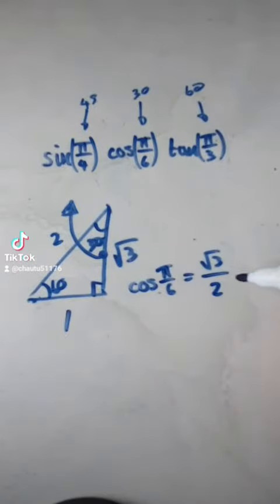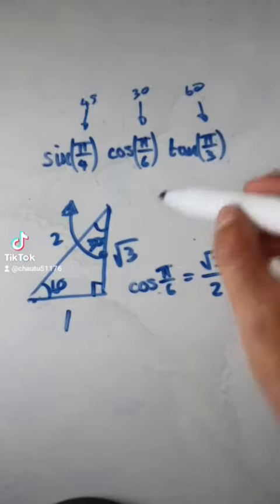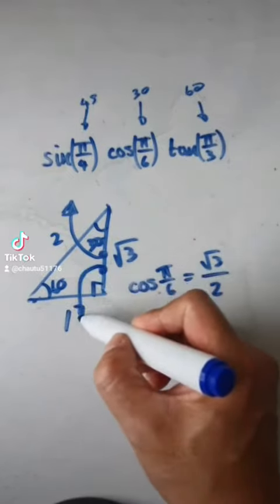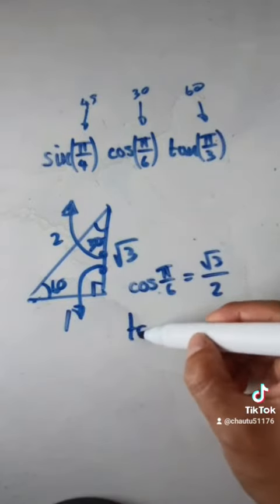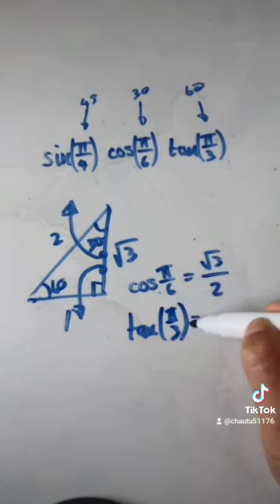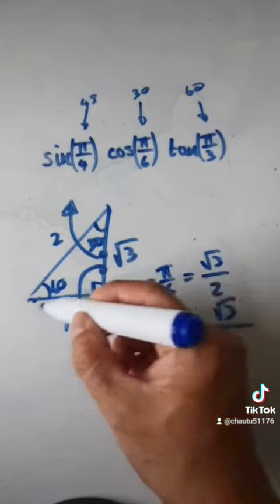And if you want to know tan of pi over 3, which is 60 degrees. 60 degrees is this. Tan is this. So tan of 60 degrees, pi over 3, equals this length divided by this length, which would be root 3 over the adjacent, which is 1.